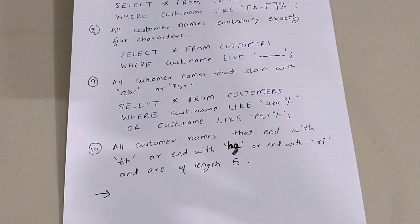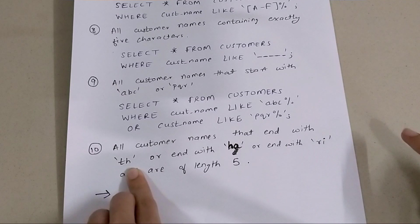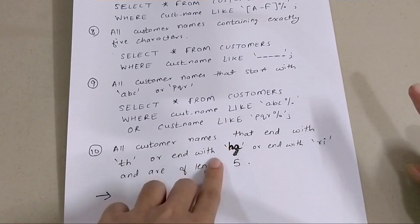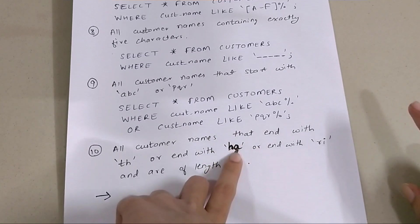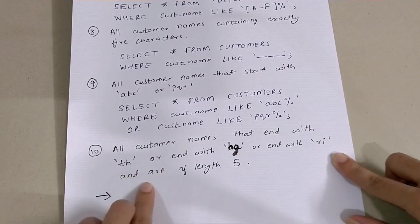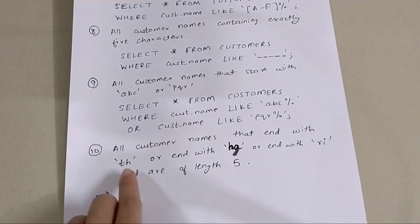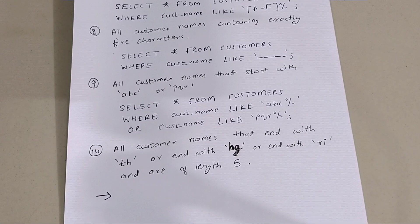The tenth question is homework — write the answer in the comment section. The question is: all customer names that end with 'th', or end with 'ha', or end with 'ri', and are of length five. So the customer name should be exactly five characters long and end with either th, ha, or ri. Make sure to write the query in the comments, and if you like the video please like and subscribe. Thank you.